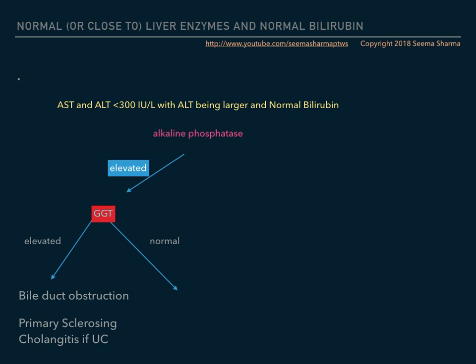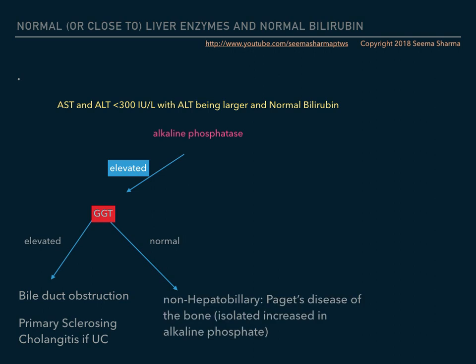If the GGT is normal, then it is a non-hepatobiliary disease — such as Paget's disease of the bone. If the alkaline phosphatase is also normal, you need to look at additional tests.